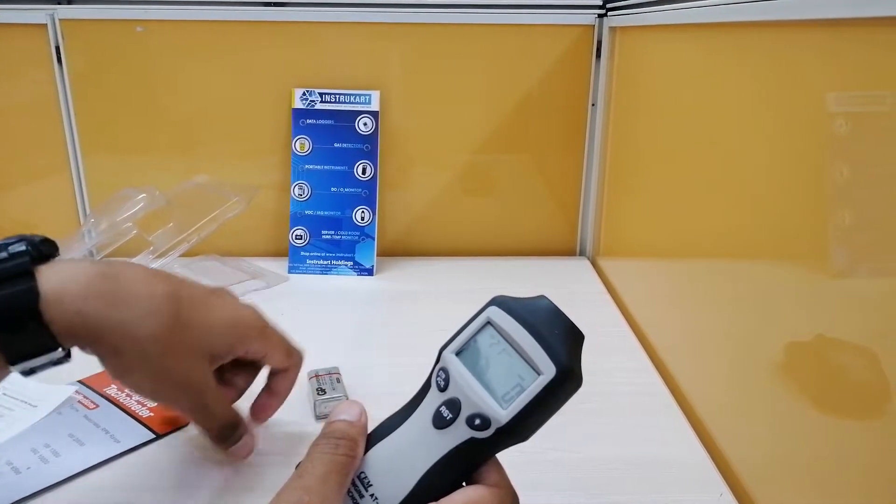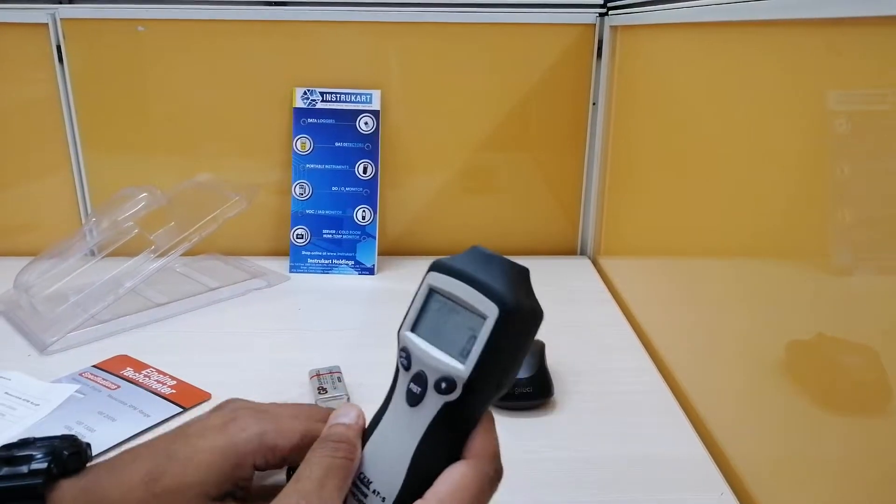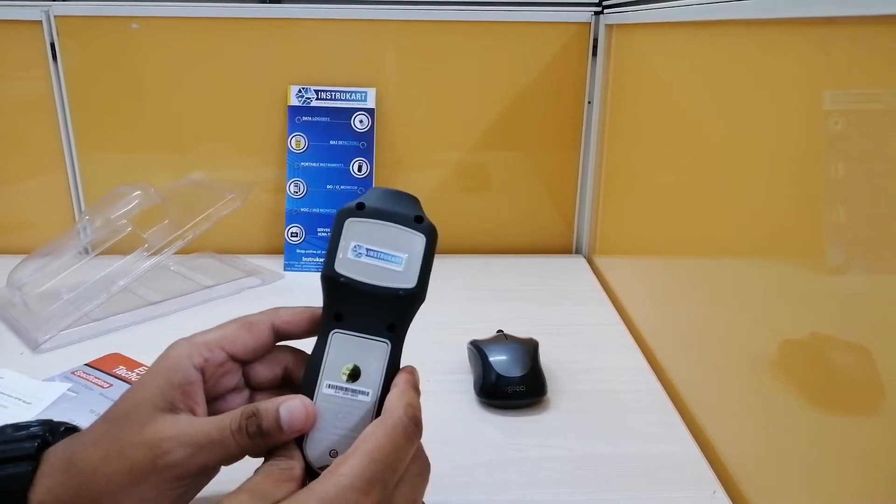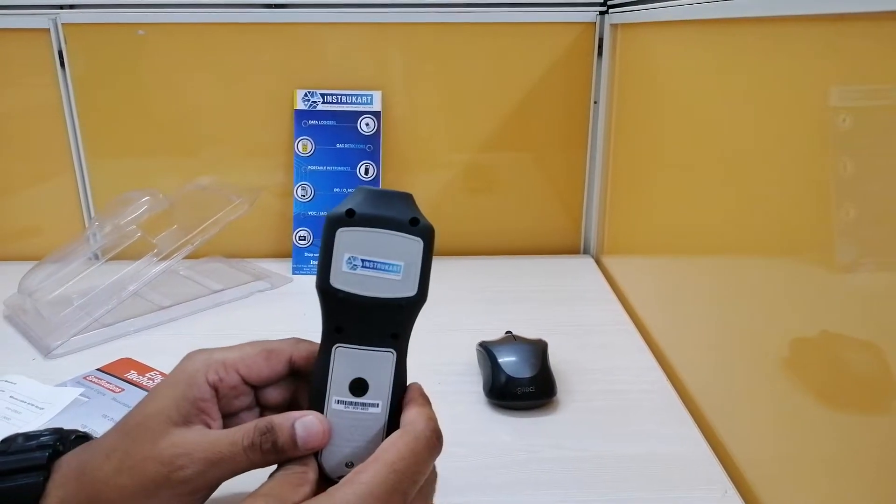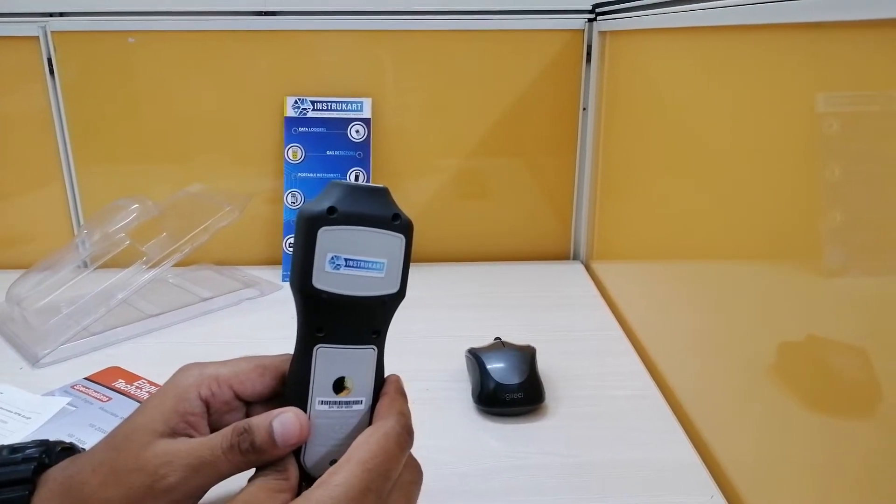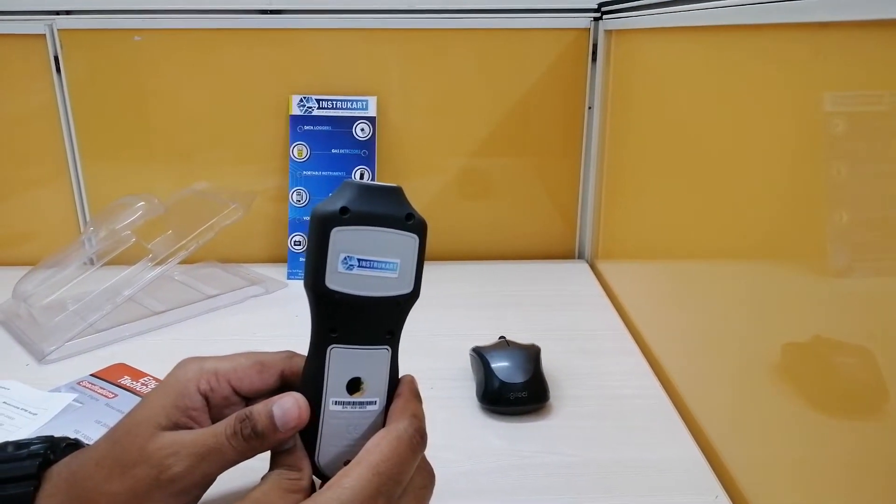The most important part is the measuring method which is the count pulses and the range of the measure. For two stroke one cylinder it is 100 to 20,000 RPM range.